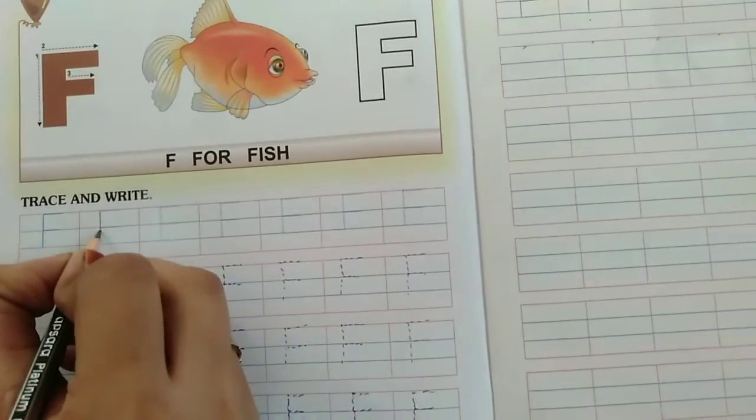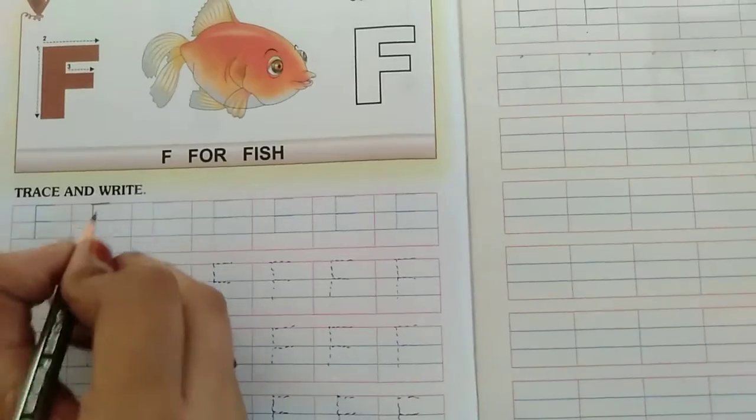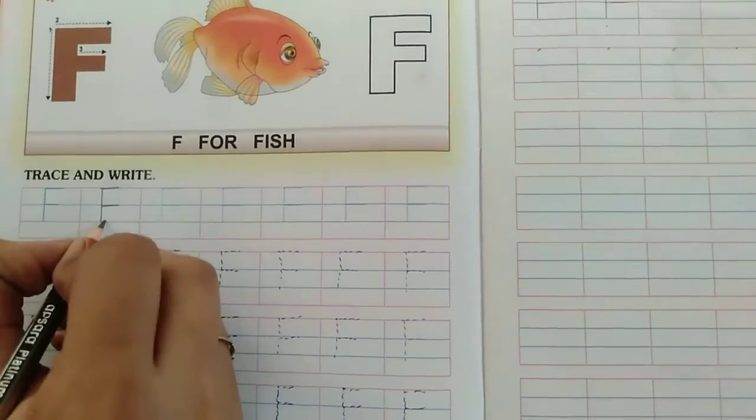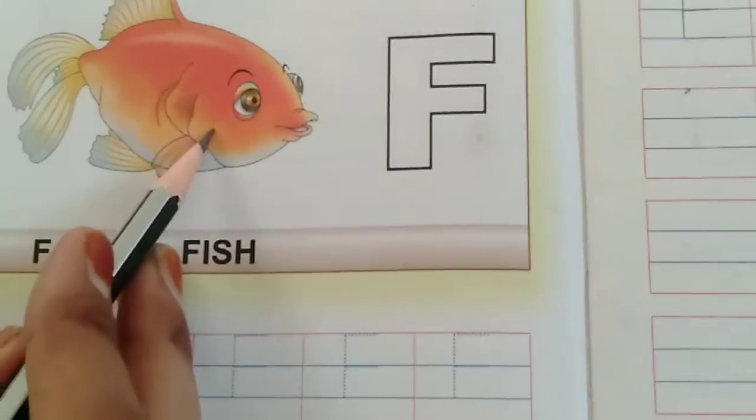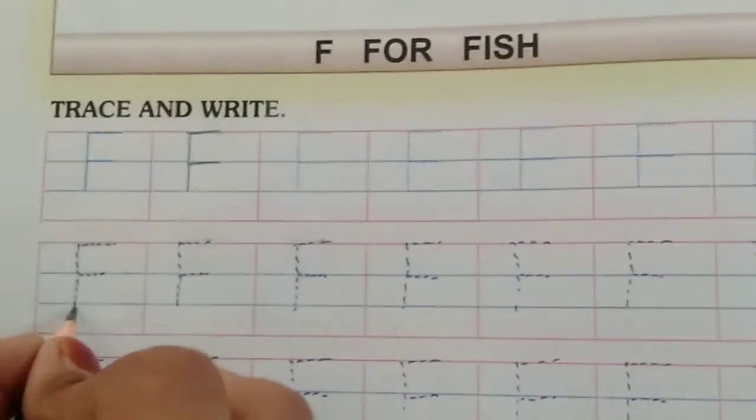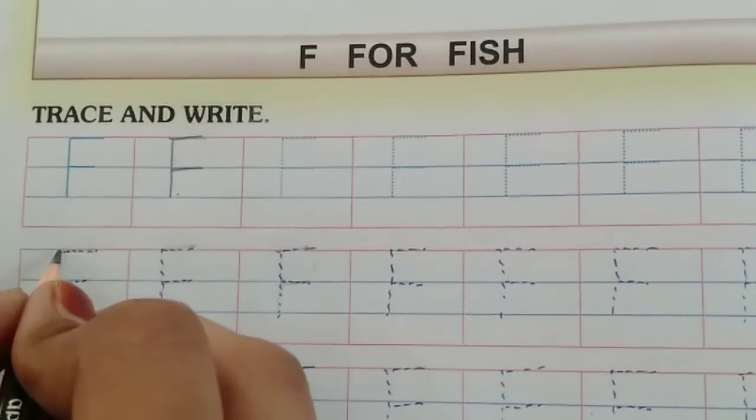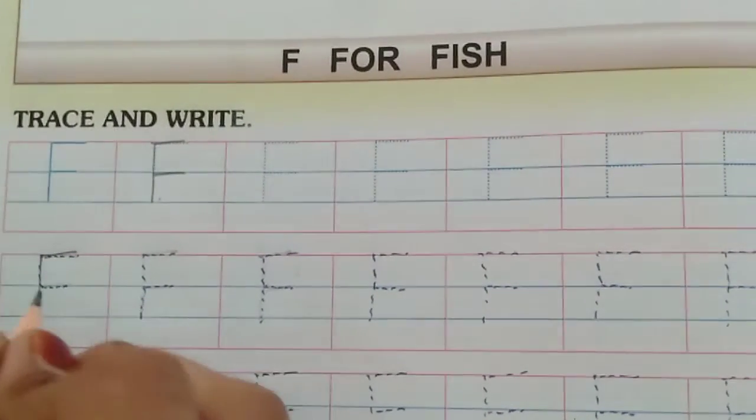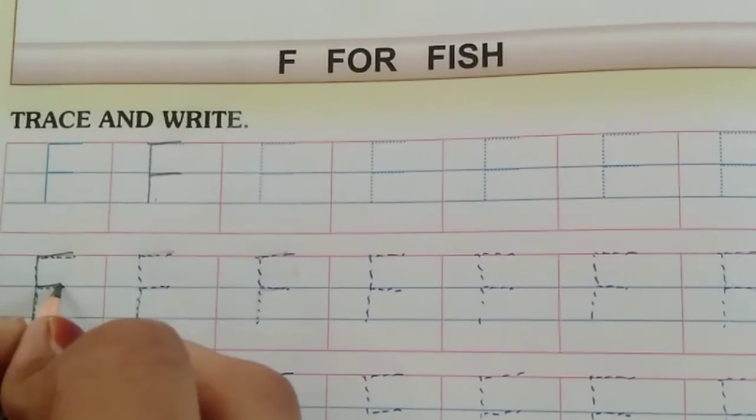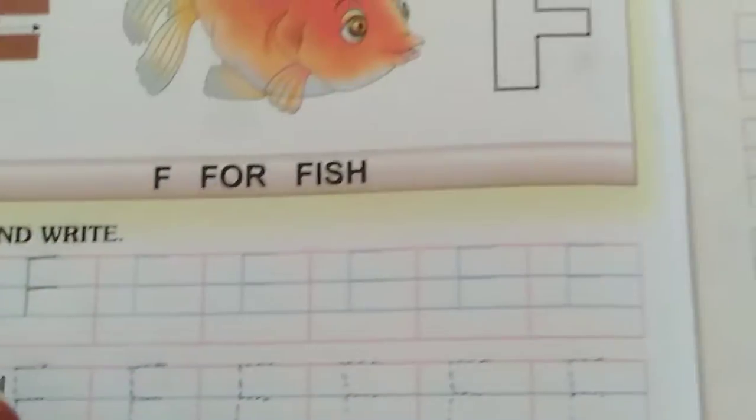Standing line, standing line, sleeping line, sleeping line. F for fish. F for fish. Red line se lekar second blue line tak standing line karenge. Red line pe first sleeping line. And first blue line pe second sleeping line. F for fish.